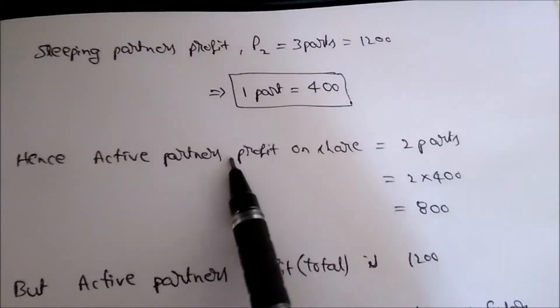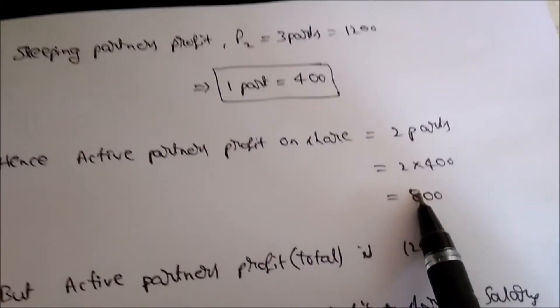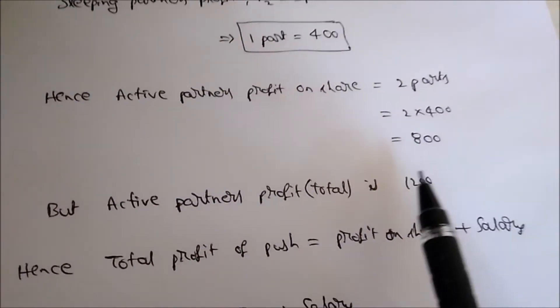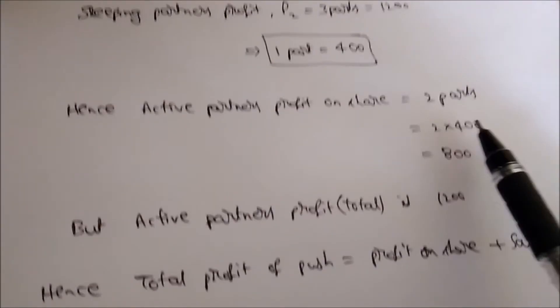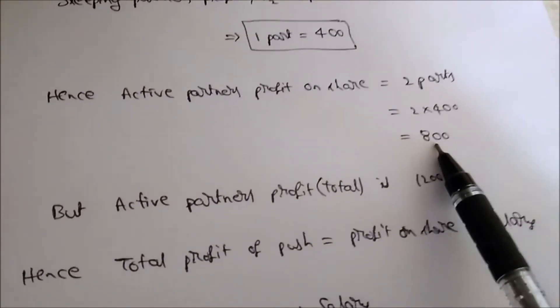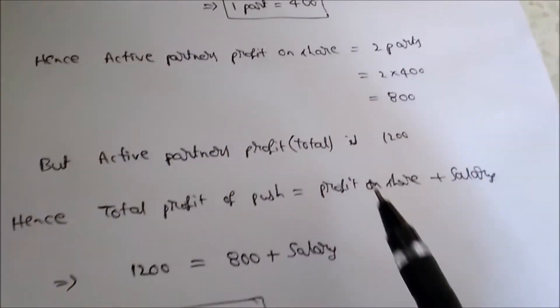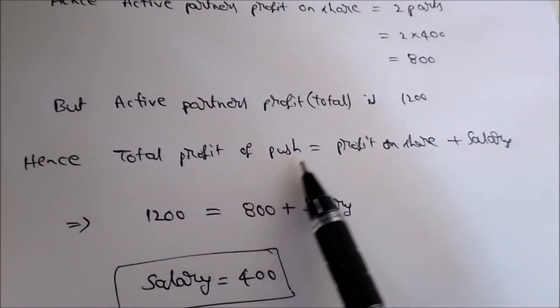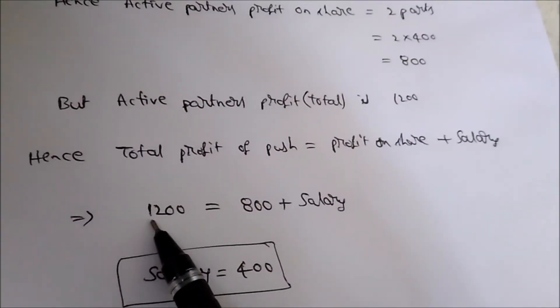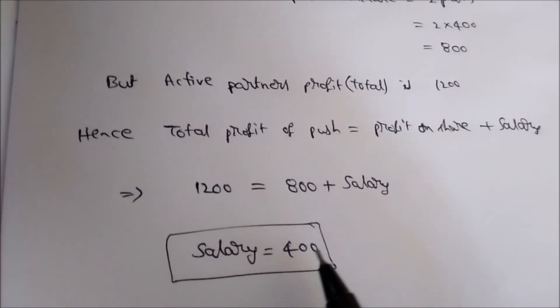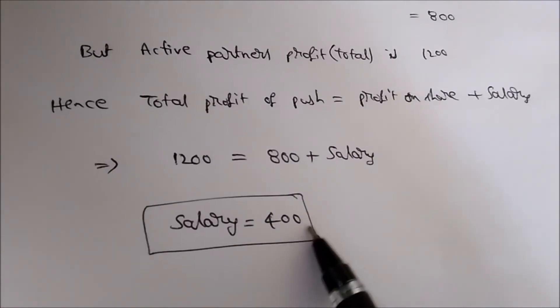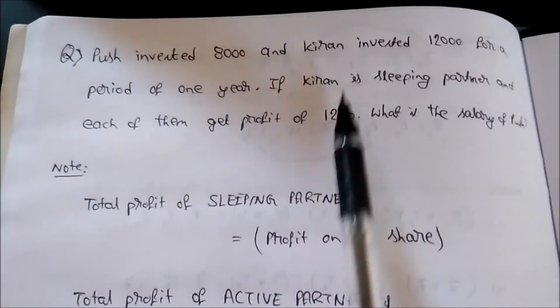The active partner Push has a profit on share of 800. We know the total profit of the active partner is 1,200 as given in the question. So: total profit = profit on share + salary, which gives 1,200 = 800 + salary. Therefore, salary = 400. The salary of Push is 400.